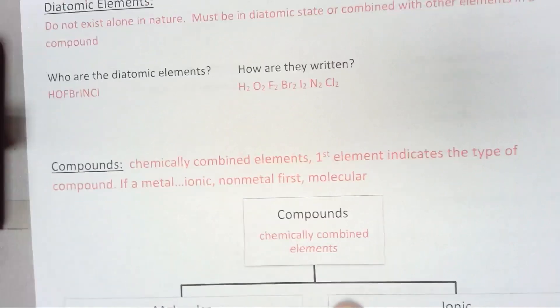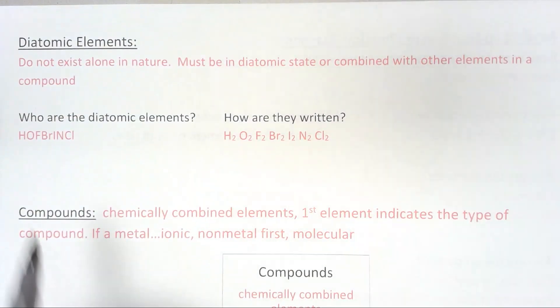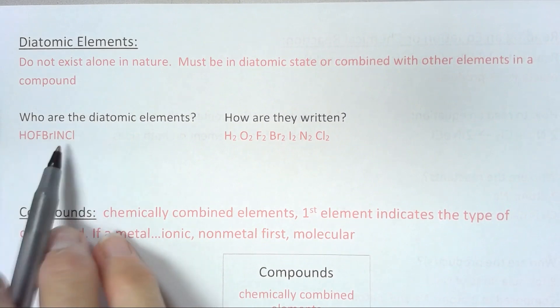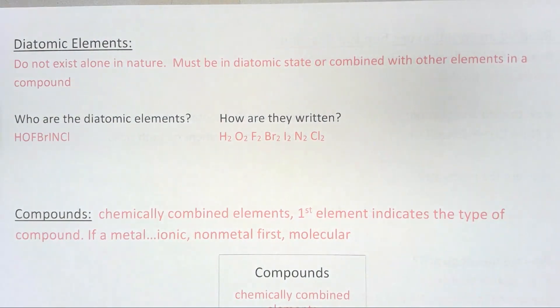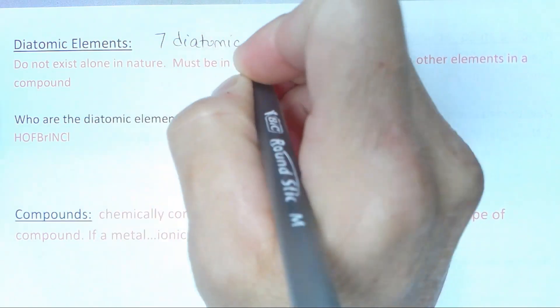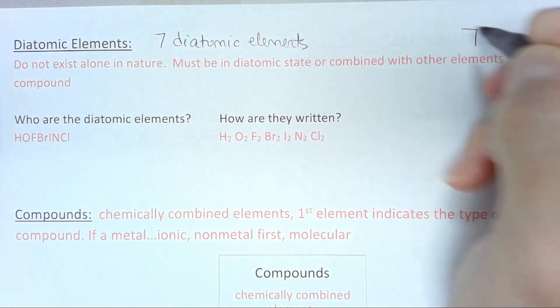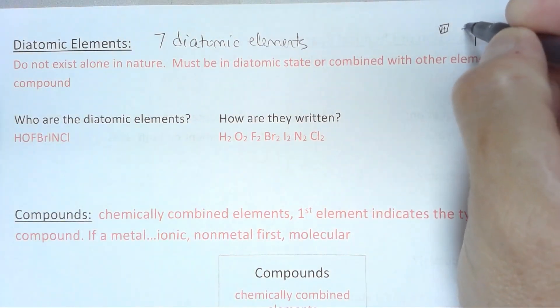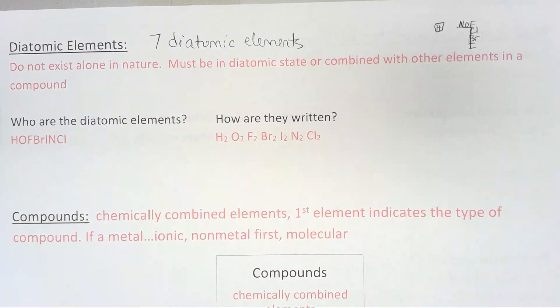I remember them not because they make a seven. I remember them because of the acronym HOFBRINKL. Hydrogen, oxygen, fluorine, bromine, iodine, nitrogen, and chlorine. That is how I remember the seven diatomic elements. But let's go back and talk about what are they? They do not exist alone in nature. They must be in the diatomic state or combined with other elements in a compound. There are seven diatomic elements.